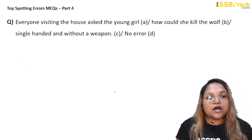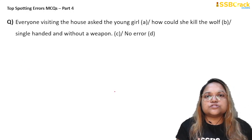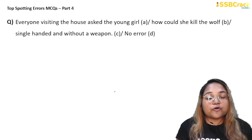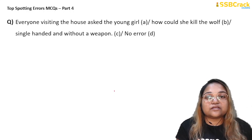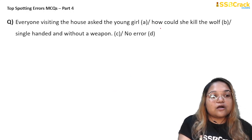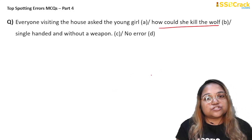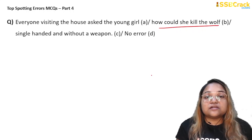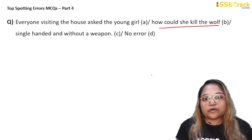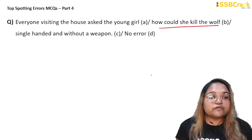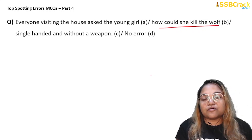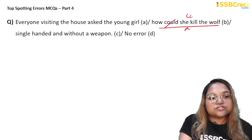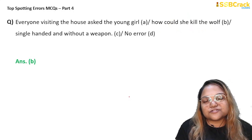Next question: 'Everyone visiting the house ask the young girl how could she kill the wolf single-handed and without a weapon.' Most candidates will answer D, thinking there is no error, but this is a tricky question that appears frequently in exams. The error is in part B. 'How could she kill the wolf?' is a direct question form, but here it is embedded inside a sentence, making it an indirect question. So instead of 'how could she,' it should be 'how she could kill the wolf.' Answer: option B.